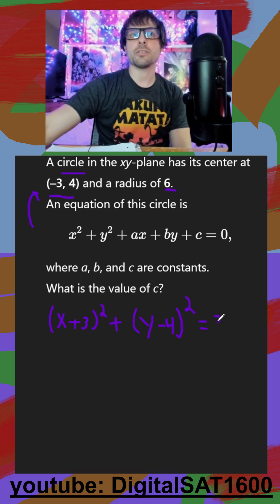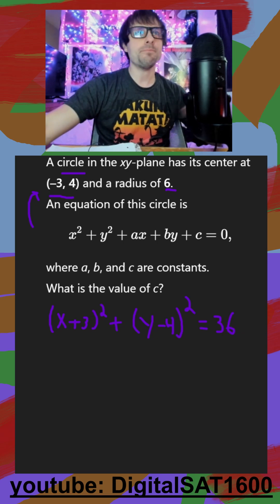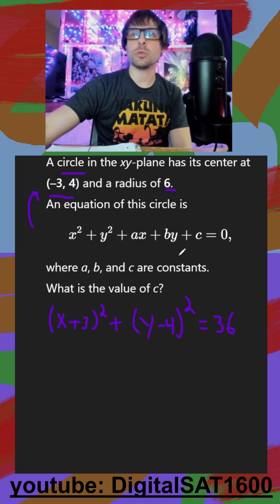And then finally, your radius is on the other side, and that's always squared. And then all I have to do is expand these and set it equal to my coefficients.